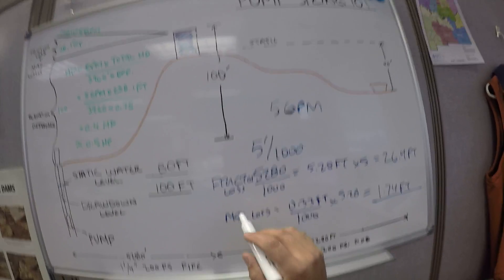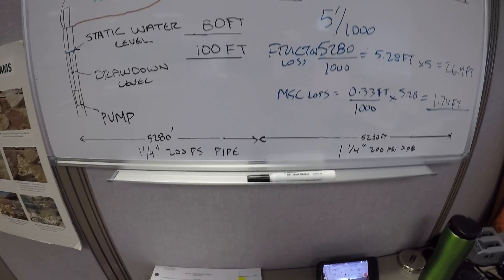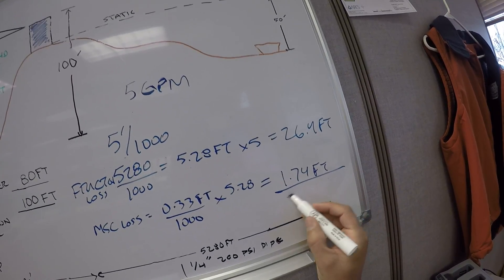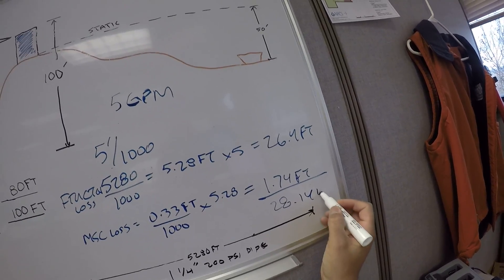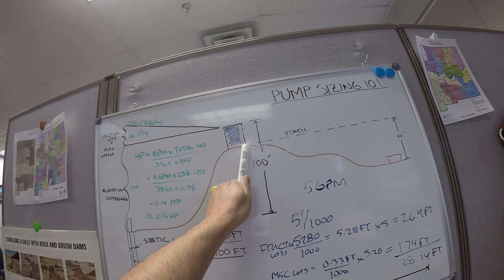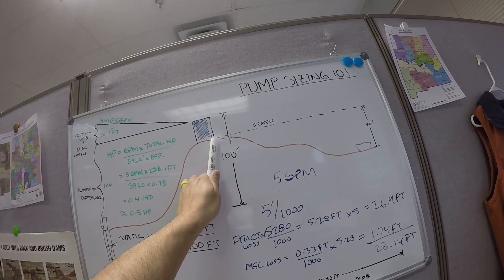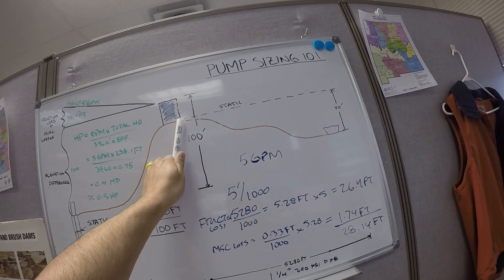You have to add friction loss plus miscellaneous losses, and it's going to be 26.4 plus 1.74, that's 28.14 feet. So water starts here, it's going to lose, due to friction and miscellaneous losses, 28.1 feet.